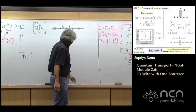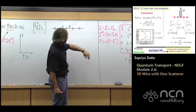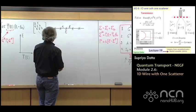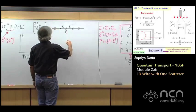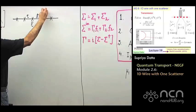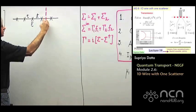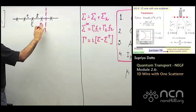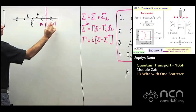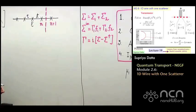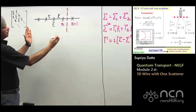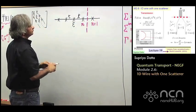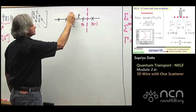In order to proceed with the calculation, I need sigma 1 and sigma 2. The argument goes something like this: supposing the wire ends at point N, and the point N plus 1 is inside the contact — we don't want to include it. So up to N is described by H, and that part becomes part of sigma.